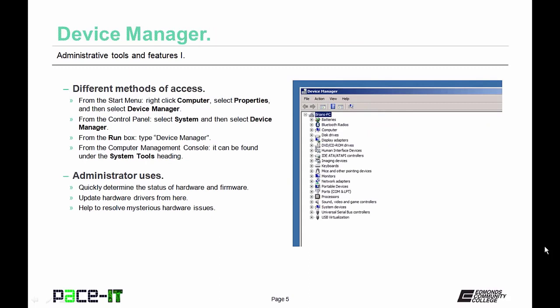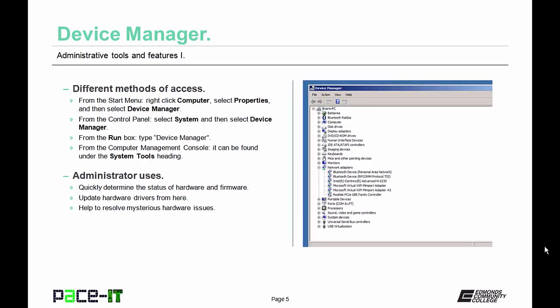Now let's talk about Device Manager. It can be accessed by right-clicking Computer and selecting Properties then Device Manager, or by right-clicking Computer and selecting Manage, from the Control Panel under System, from a run or search box by typing 'device manager', or from the computer management console under system tools. Device Manager allows the administrator to quickly determine the status of hardware and firmware, update hardware drivers easily, and help resolve mysterious hardware issues.